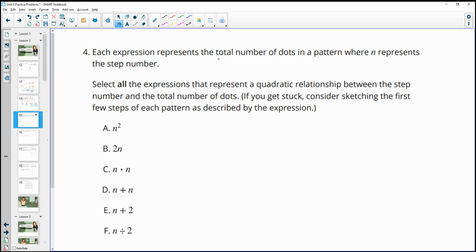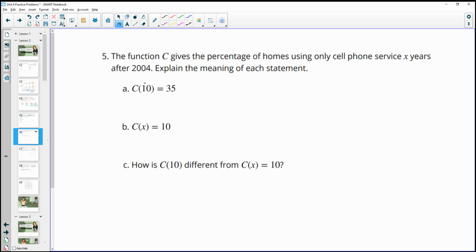Number four, each expression represents the total number of dots in a pattern where n represents the step number. Select all expressions that represent a quadratic relationship. Quadratic means that you square something. And remember that squaring something means multiplying it by itself. So we could see a square represented like this, n to the second power. Two times n is not squaring it. n times n, this is a different way to write out n squared. So this would be a quadratic. Adding, no. Adding, no. Dividing, no.